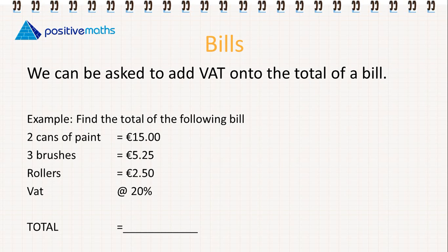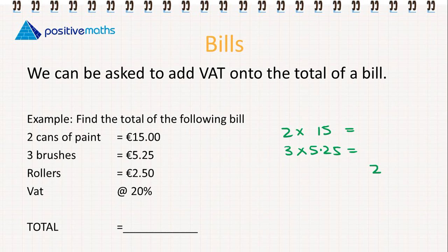We can also be asked to add VAT on to the total of a bill. Find the total of the following: two cans of paint at €15 each, three brushes at €5.25 each, and rollers at €2.50, then add VAT at 20%. So we have 2 × €15 = €30 for paint, 3 × €5.25 = €15.75 for brushes, and €2.50 for rollers.